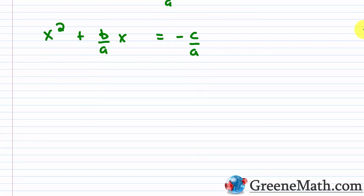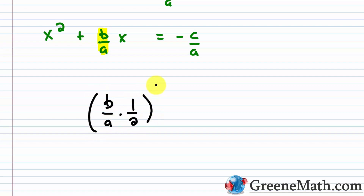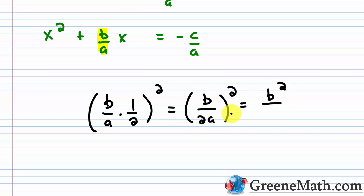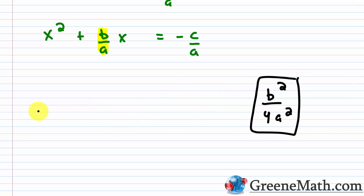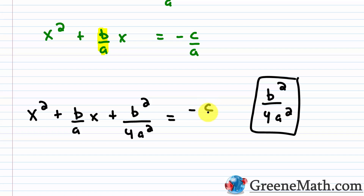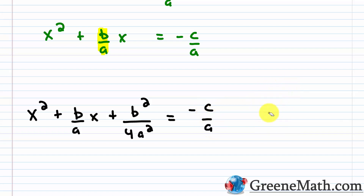Now we complete the square by transforming the left side into a perfect square trinomial. We take the coefficient of x, which is b over a, cut it in half to get b over 2a, and then square the result to get b squared over 4a squared. We add this to both sides: x squared plus b over a times x plus b squared over 4a squared equals negative c over a plus b squared over 4a squared.